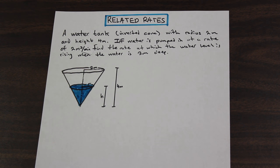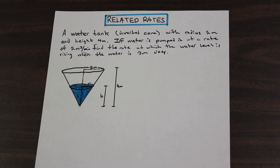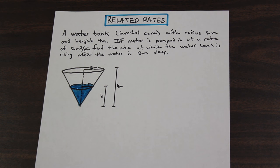I'm going to start by reading the question and then we'll talk about it. We have a water tank which is an inverted cone with a radius of two meters and a height of four meters. Water is being pumped into this cone at a rate of two meters cubed per minute. Find the rate at which the water level is rising when the water is three meters deep.